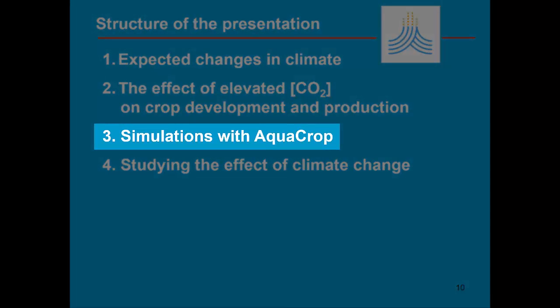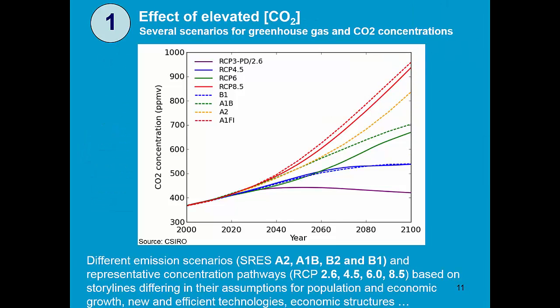Let us now discuss how this is simulated in AquaCrop. The first thing to do is to select an emission scenario or a representative concentration pathway as the CO2 file. Several options are available, and the scenarios and pathways differ because they assume different storylines — they differ in their assumptions for population and economic growth, the introduction of new or more efficient technologies, economic structures, and so on.